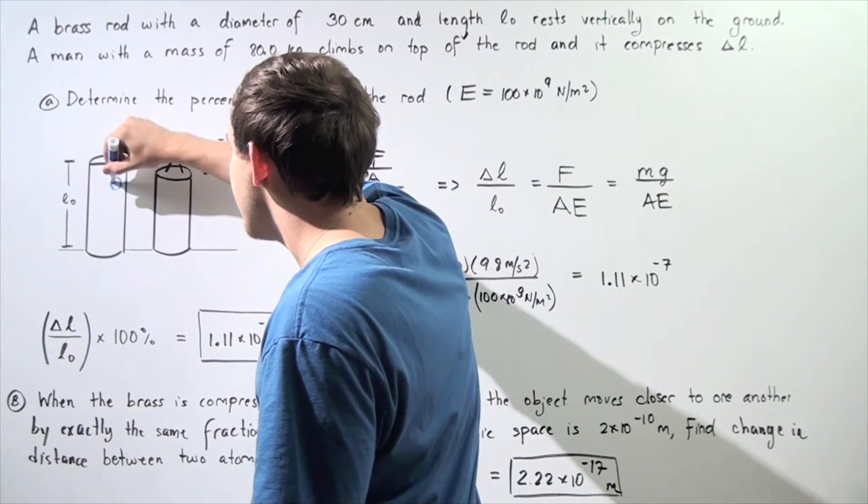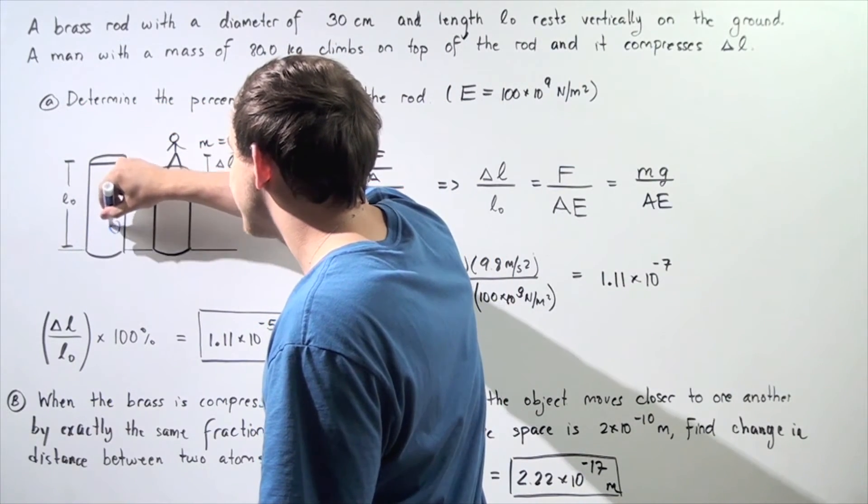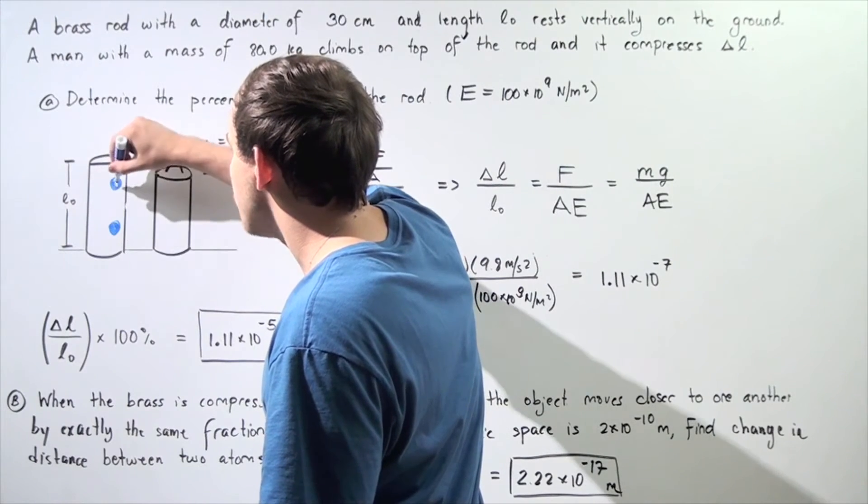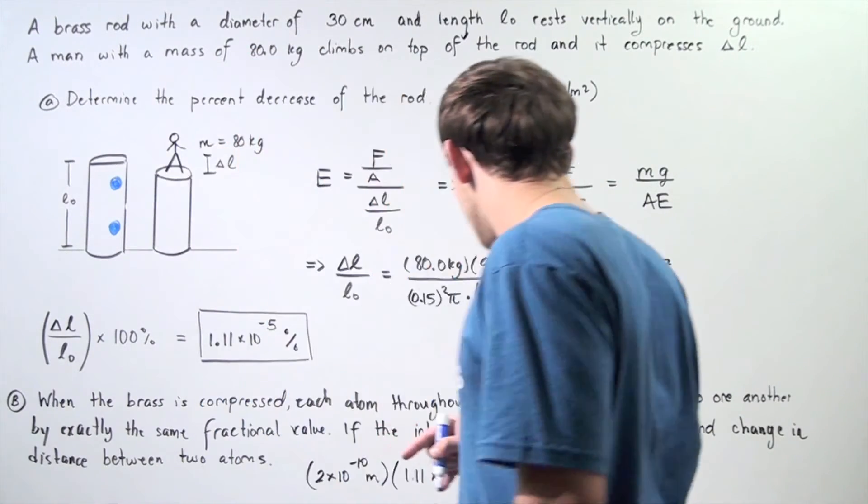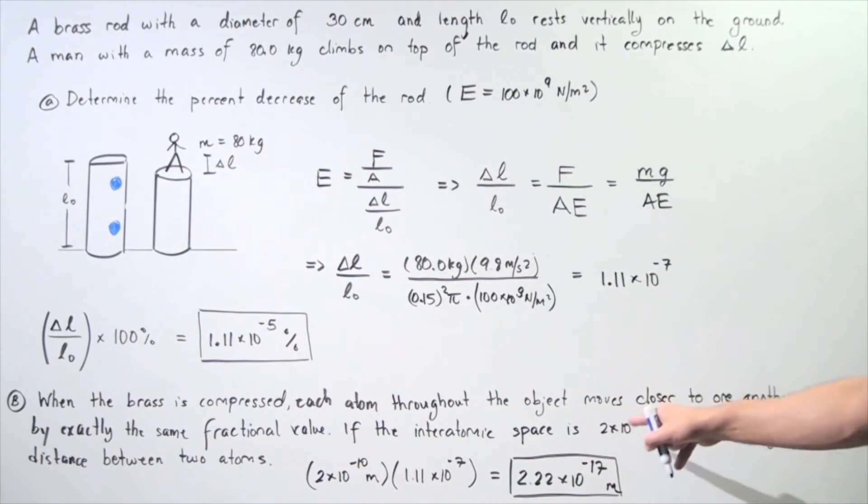we're exaggerating here, of course, but let's suppose here's one atom, and here's a second atom. And before the object compressed, the distance between these two atoms was 2 times 10 to the negative 10 meters.